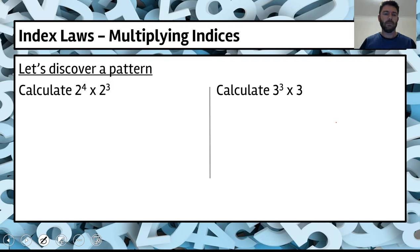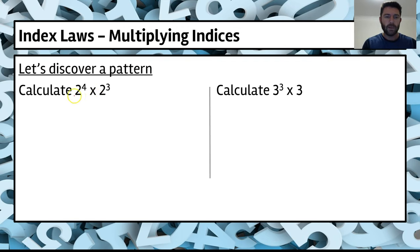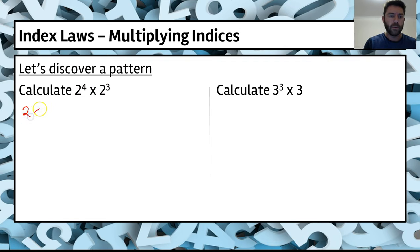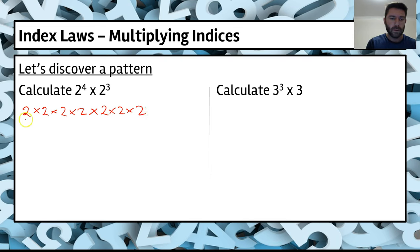Let's discover this pattern. We've got 2 to the power of 4 times 2 to the power of 3. We've got the same bases, so we're going to expand these out. We get 2 times 2 times 2 times 2 — that's 2 to the power of 4 — and we're multiplying that by 2 to the power of 3, which is 2 times 2 times 2.